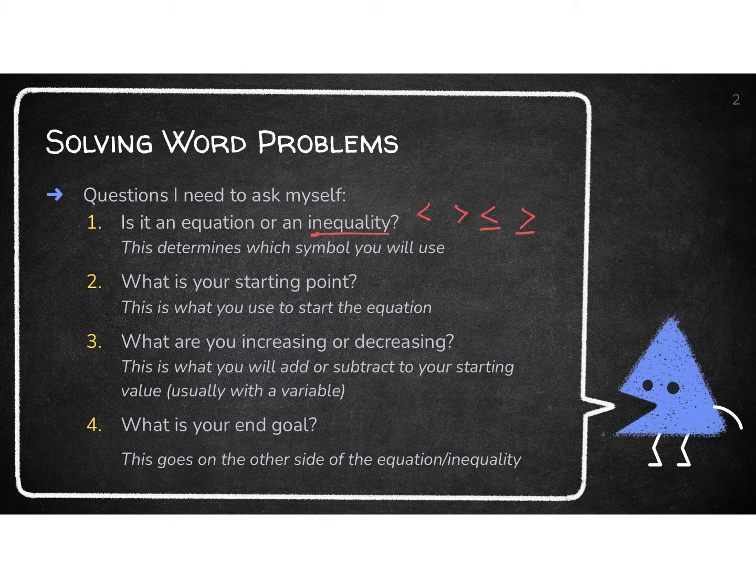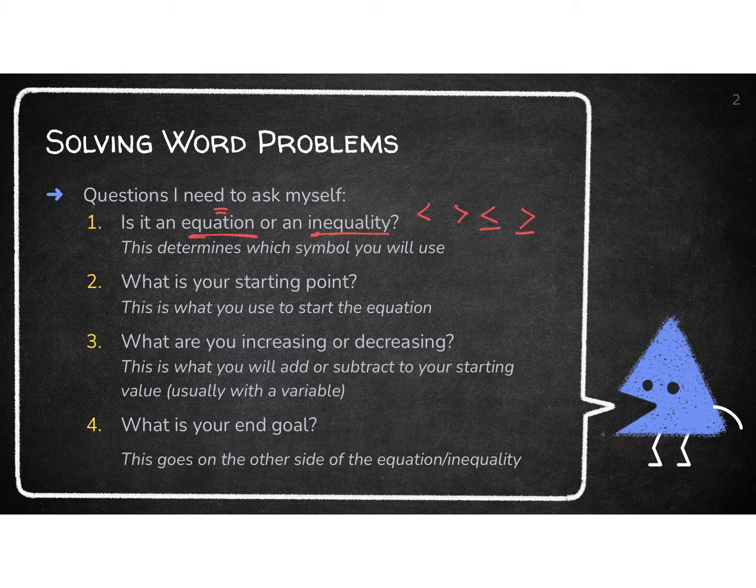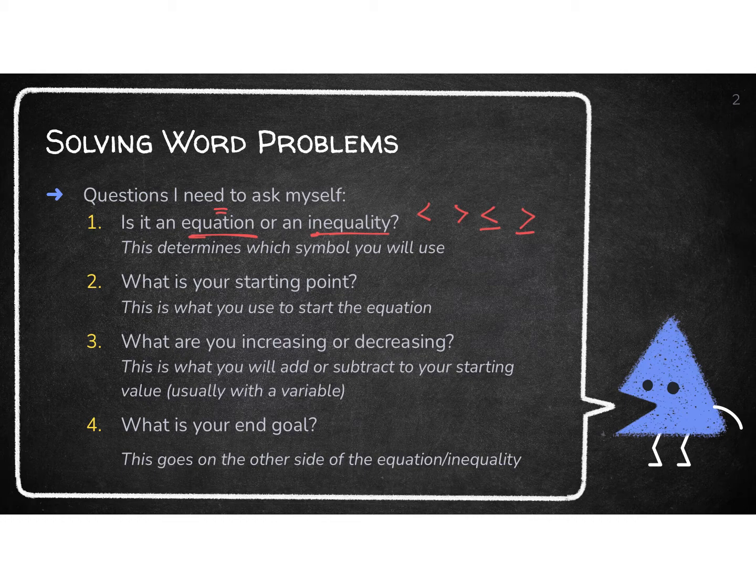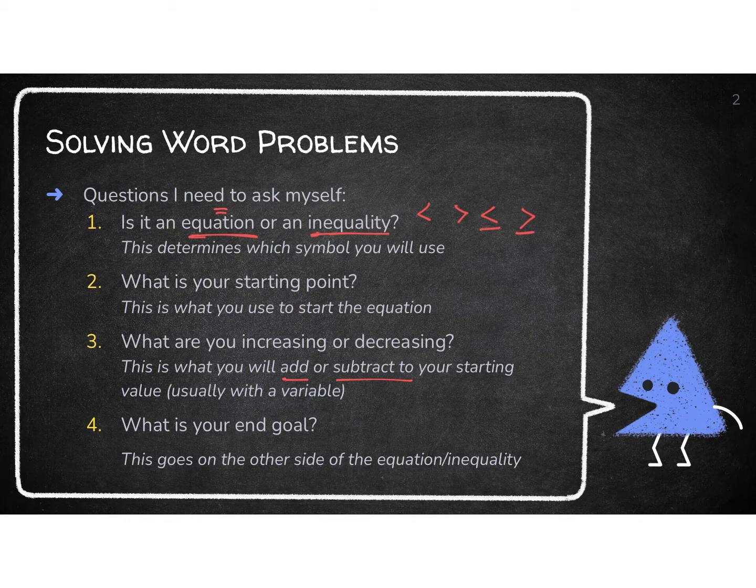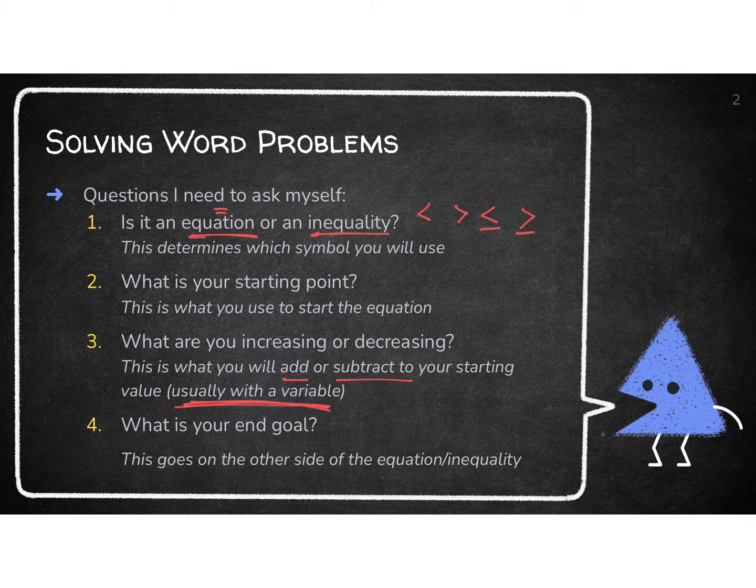Once you determine if you're going to have an equation, equal sign, or inequality, then you're going to say, what am I starting at? What's the number that I'm starting at? Am I going to increase or decrease? That's going to tell you if you're going to add or subtract from your starting point. And that usually has the variable with it because we increase or decrease per day or per year. So that per tells me that's my variable.